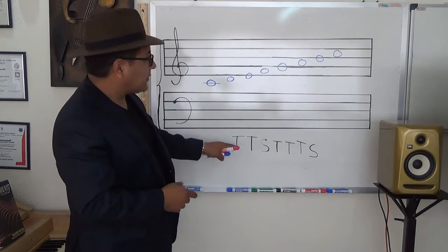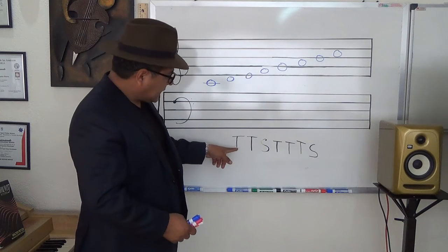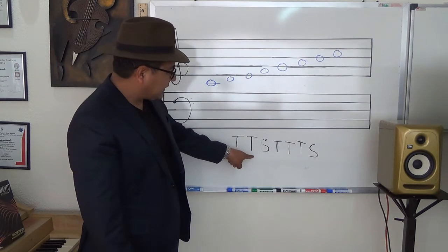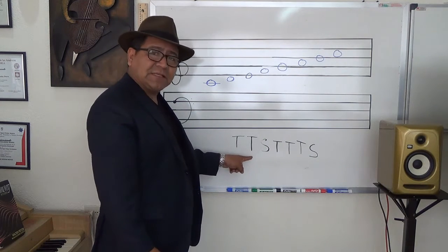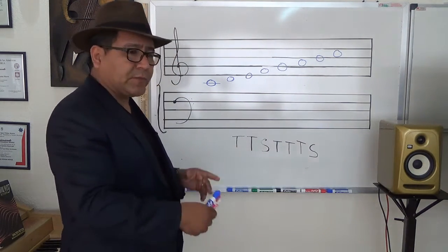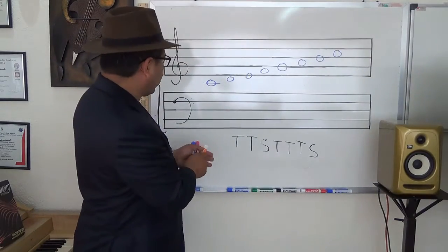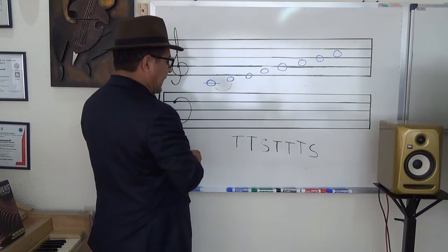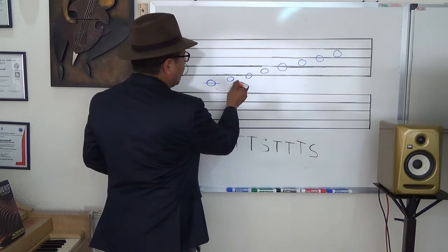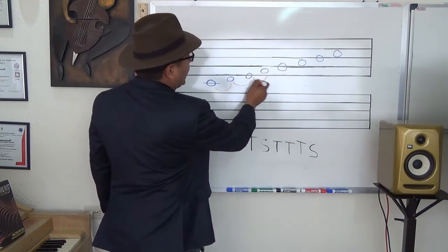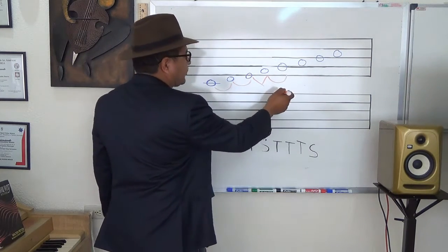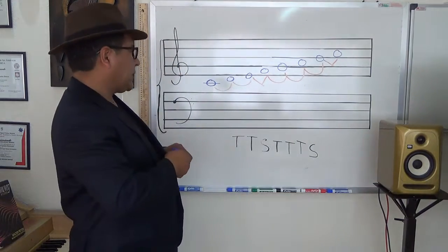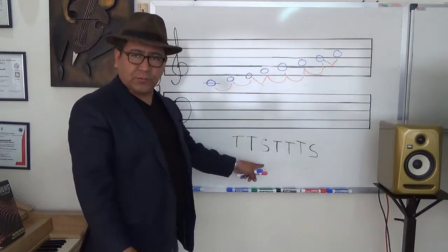The formula tells us: the distance between the first and second note must be one tone; the second to the third must be one tone; the third to the fourth is a semitone; and so on. From C to D is a tone, D to E is a tone, E to F is a tone, F to G is a tone, G to A is a tone, A to B is a tone, and B to C is a semitone — represented by an S for semitone.